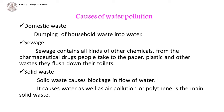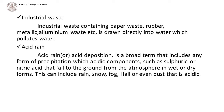Solid waste causes blockage in the flow of water and causes water as well as air pollution; polythene is the main solid waste. Industrial waste containing paper waste, rubber, metallic and aluminium waste is drained directly into water, which pollutes it.